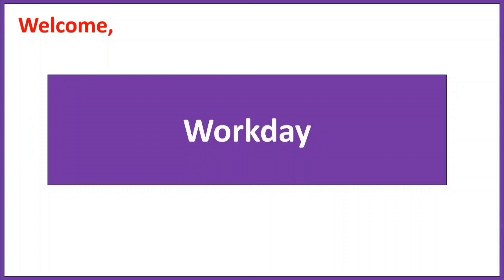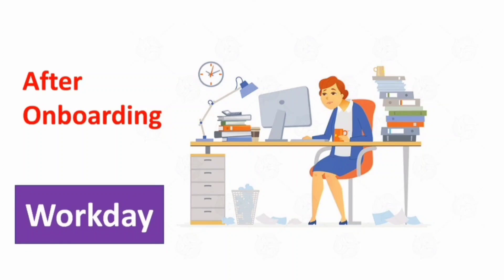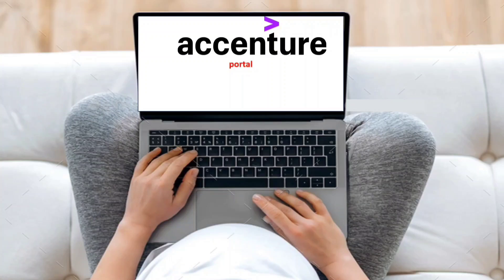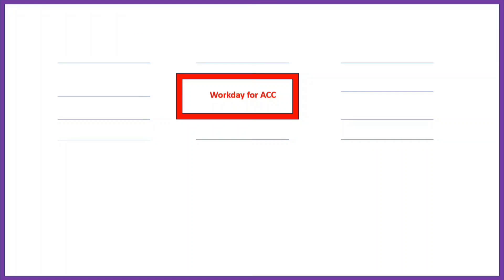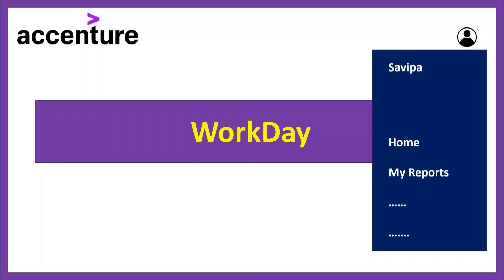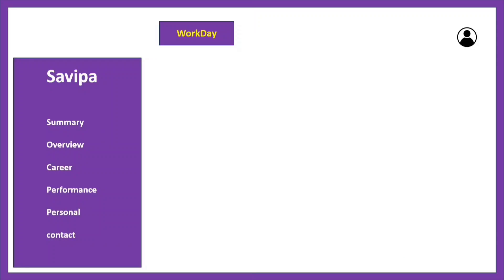However, after onboarding you will see a different Workday profile, which is very useful. Please don't skip this part. After onboarding, go to the AllSec portal in Accenture and you can find the Workday profile there. Click on it, then go to the profile section and click on 'View Profile'. You will be redirected to a page with sections including Summary, Overview, Career, Performance, Personal, and Contact.